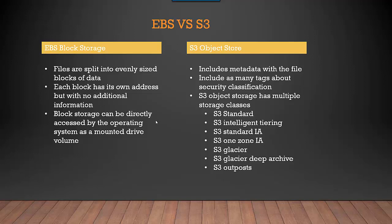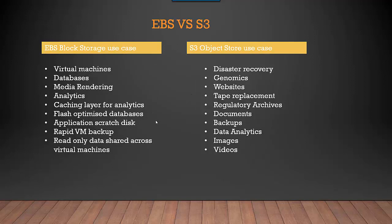With S3 object storage, it includes metadata with a file — as many tags as you want, such as security classification. You can have a lot of metadata there. Some examples of S3 object storage classes are S3 Standard, S3 Intelligent-Tiering, S3 Standard-IA, One Zone-IA, Glacier, Glacier Deep Archive, and S3 Outposts.